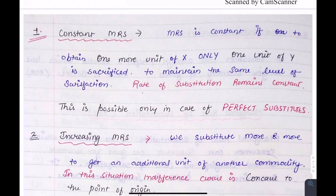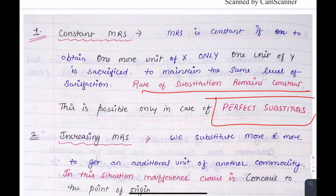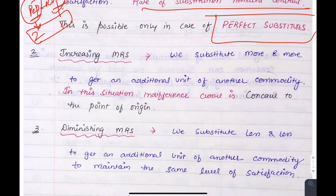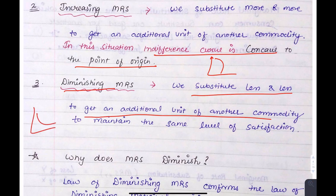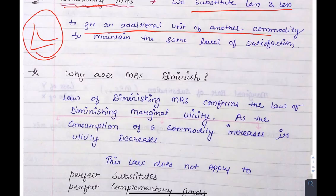The rate of substitution will be constant in the case of perfect substitutes. In the increasing MRS case, the indifference curve is concave. In the diminishing MRS case, we are sacrificing additional units. Usually, our indifference curve is downward sloping. The law of diminishing MRS confirms the law of diminishing marginal utility — as the consumption of a commodity increases, its utility decreases.